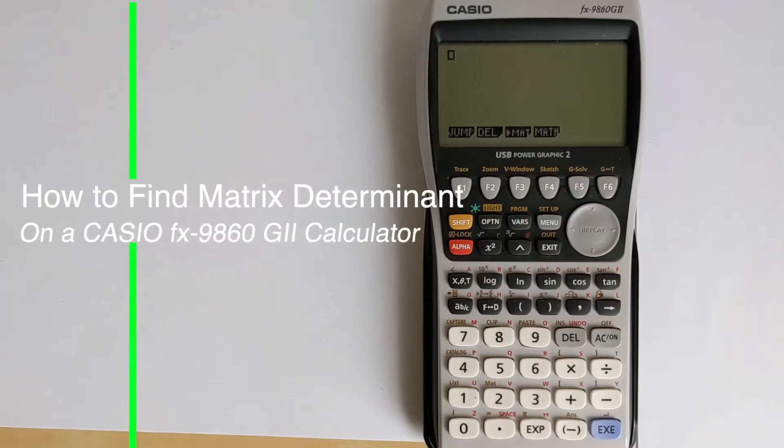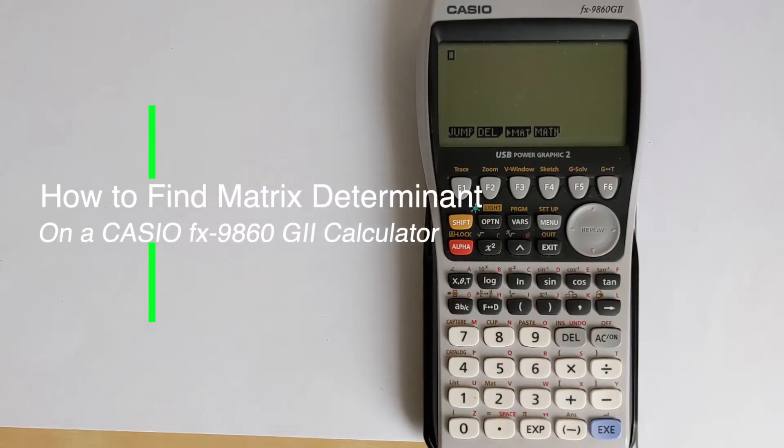In this video, I'm going to teach you how you can find a determinant using a Casio FX9860G2 calculator. Now, for this video, we're going to do a work example.